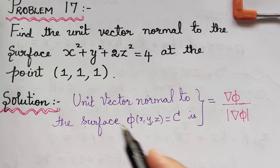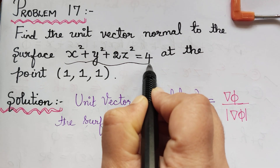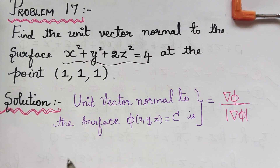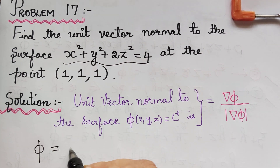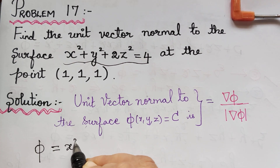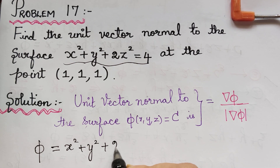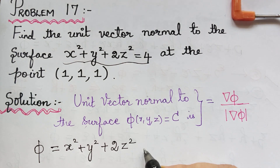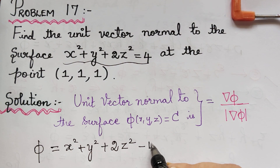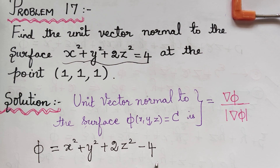The given surface can be written as a function φ. That is, φ = x² + y² + 2z², and bringing the 4 to the left, it becomes negative 4. So φ = x² + y² + 2z² - 4.